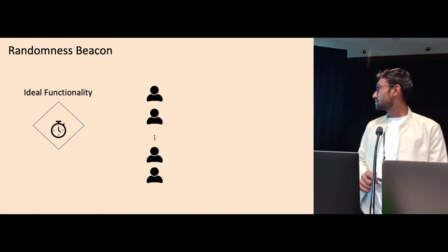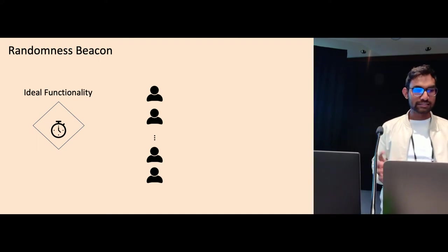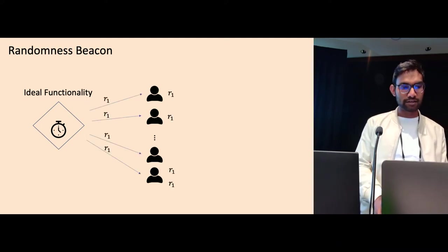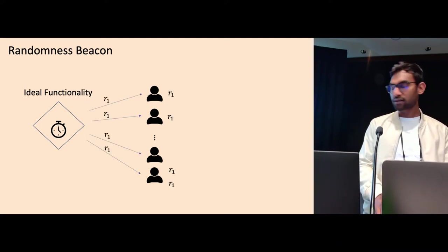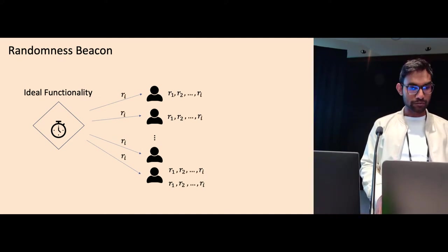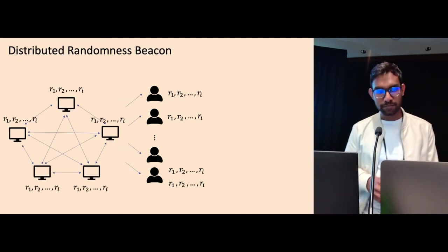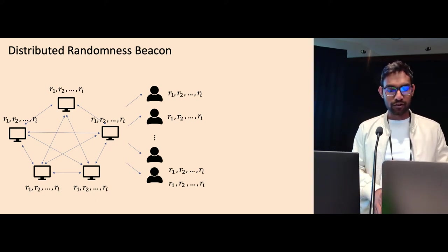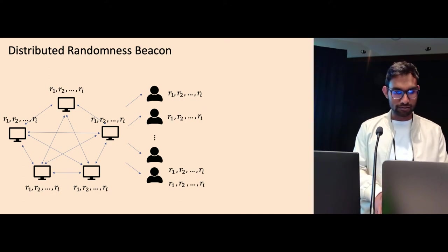A randomness beacon can be defined as this ideal functionality that has a clock in it, and what this functionality does, it outputs fresh random string to the clients after every certain time interval. And in Distributed Randomness Beacon, we want to replace this ideal functionality with a distributed protocol, so that we get fault tolerance.